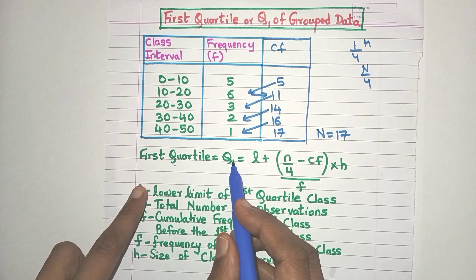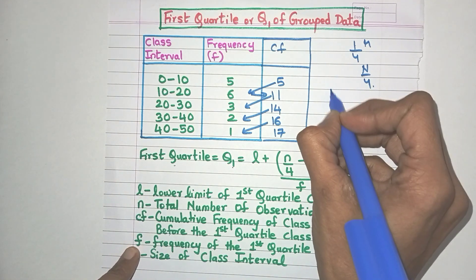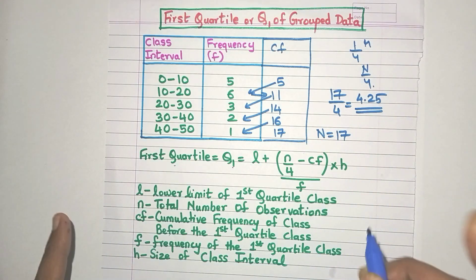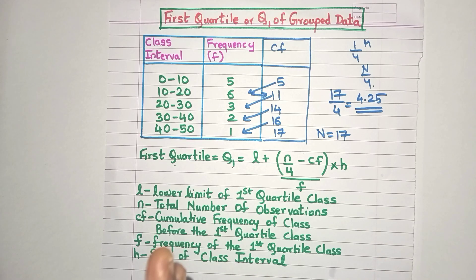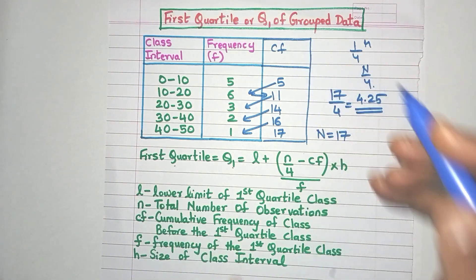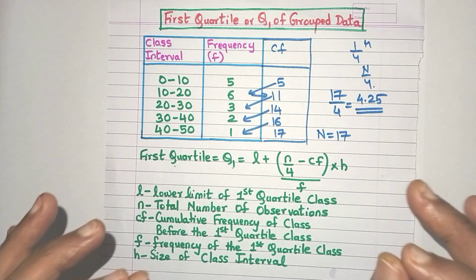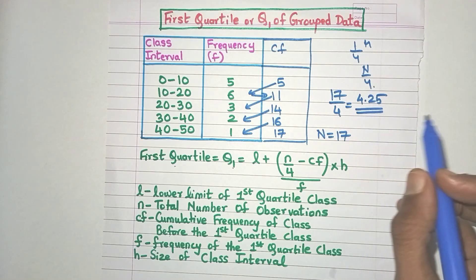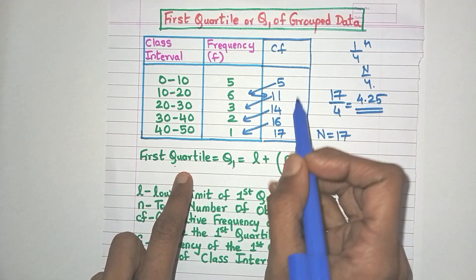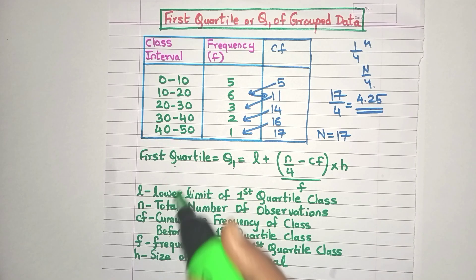The first quartile lies at the n/4th position. n is 17, so 17/4 is 4.25. Q1 is at the 4.25th position. Now, in which class interval does this lie? The 0 to 10 class interval has CF of 5, meaning observations 1 to 5 lie there. So the 4.25th observation lies here. That means the first quartile class is 0 to 10.